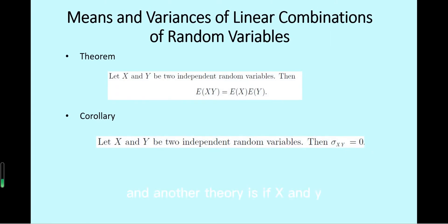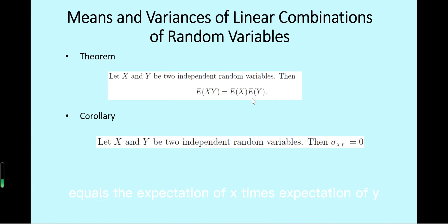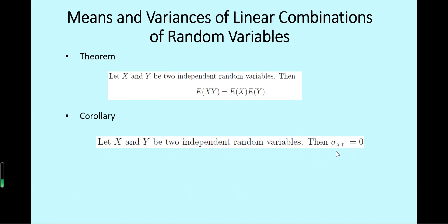Another theorem states: if x and y are two independent random variables, then E(xy) equals E(x) times E(y). A corollary is that if x and y are independent, their correlation coefficient is zero.